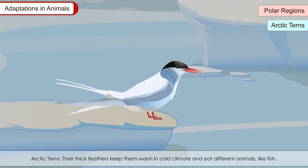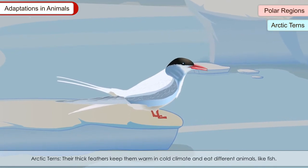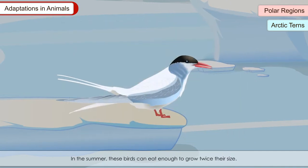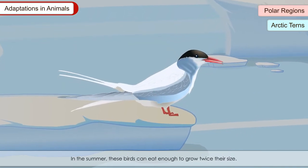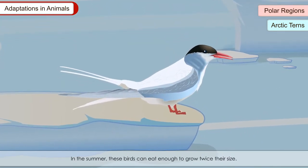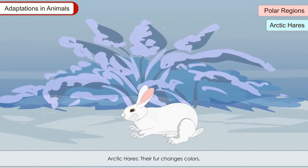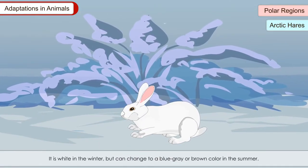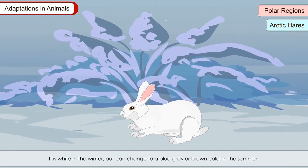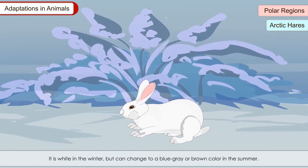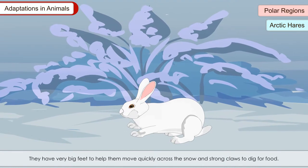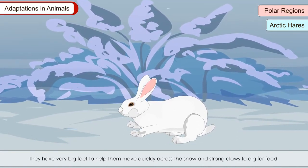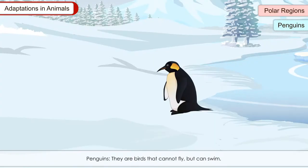Arctic terns: Their thick feathers keep them warm in cold climate and they eat different animals like fish. In the summer, these birds can eat enough to grow twice their size. Arctic hares: Their fur changes colour — it is white in winter but can change to blue-gray or brown in summer. They have very big feet to help them move quickly across the snow and strong claws to dig for food.